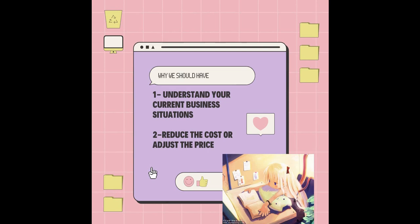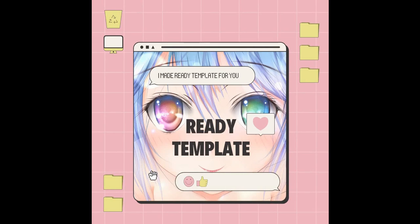This will be the element for your business - maybe you should reduce the cost or you need to adjust your price. For the first six months and one year, you cannot expect to generate a lot of profit. What we need is to balance and survive our business. That's why the income statement is very important.